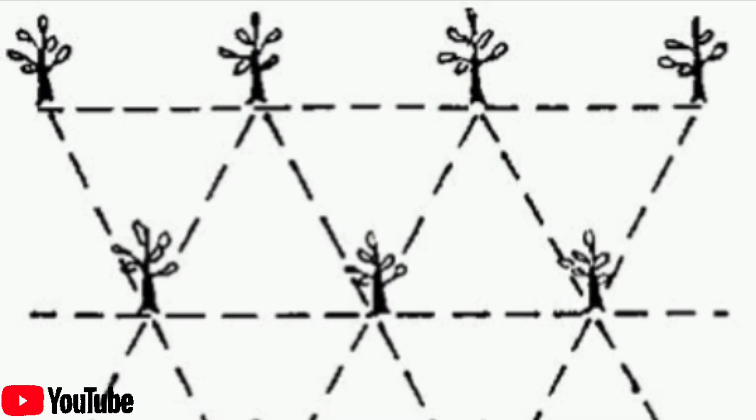Triangular system. The trees are planted in such a way that those in the even rows are midway between those in the odd rows. This system is based on the principles of an equilateral triangle.